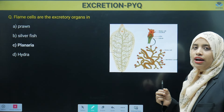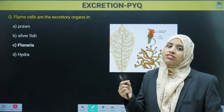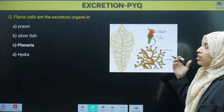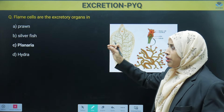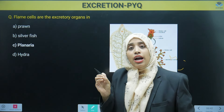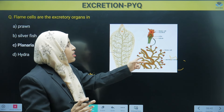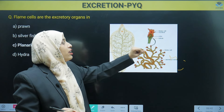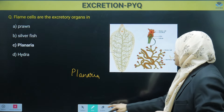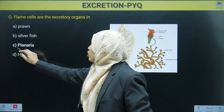Next question: flame cells are excretory organs — in which organism are they found? Just as nephron is the unit of the kidney and excretory system in humans, flame cells are also an excretory unit, but in which organism? The options are prawn, silverfish, planaria, or hydra. The diagram shown here is the structure of a flame cell and the organism is planaria. Flame cells in planaria have a nucleus and cilia, and excretory waste is handled by them. So directly we can mark that flame cells are found in planaria.